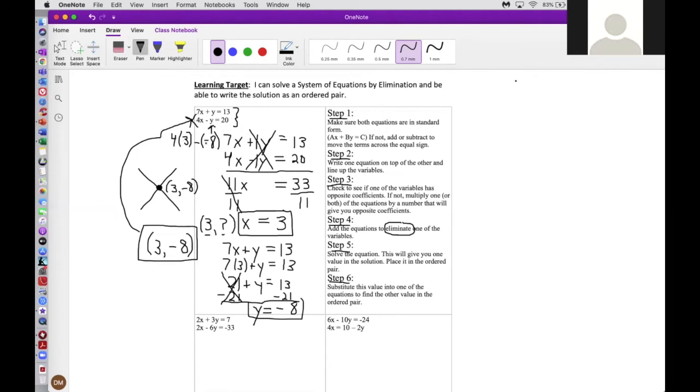Okay. So, is 4 times 3 minus a minus 8 equal to 20 like the equation says? Well, let's see. 4 times 3 is 12. Minus a minus 8 is the same as plus 8. And sure enough, 12 plus 8 equals 20. So, that is a good way to check your ordered pair when you finish this six-step process of elimination.